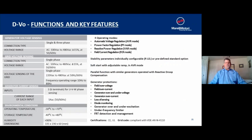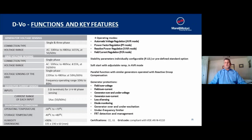The DVO is capable of either single or three-phase sensing and performs four effective operating modes: the AVR function, power factor regulation, reactive power function, and field current regulator. An additional benefit of the DVO digital voltage regulator is its built-in generator protective relay functions, including field over-voltage, field over-current, generator over-current, loss of sensing, diode monitoring, generator over/under excitation, under-frequency limiter, and FRT detection and management. In some instances, this can be utilized in lieu of protective relaying on your bus or load lines.